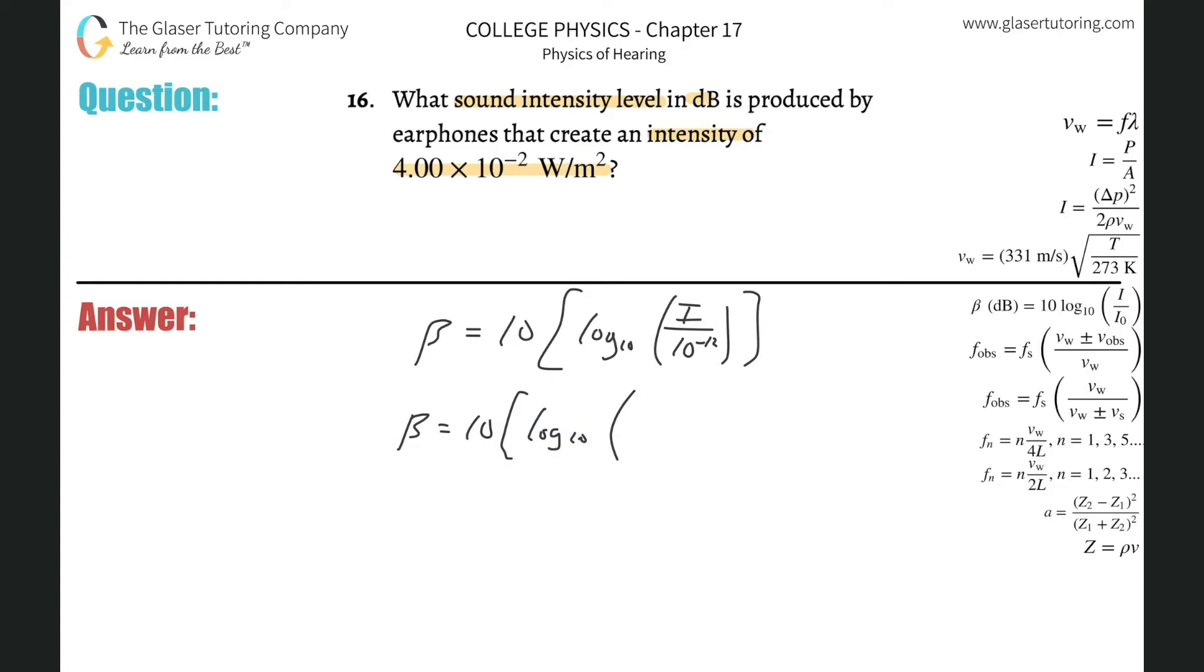4 times 10 to the minus 2 divided by 10 to the minus 12, and that's it. Calculator time! So first let's do what's in the brackets, the log stuff.